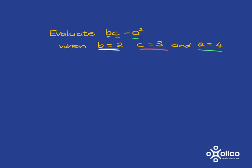Before we do this, we just need to make sure that we can read our algebra correctly. So when we write bc, it means b multiplied by c.